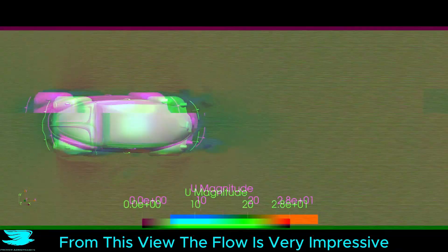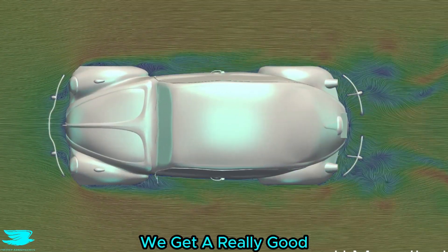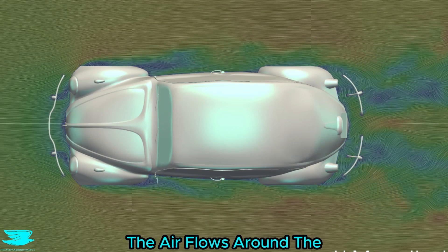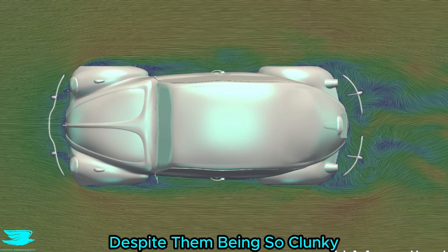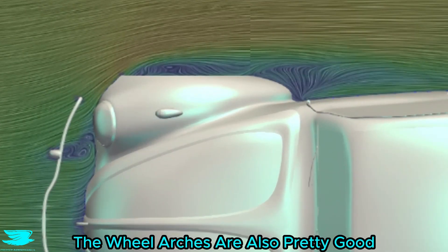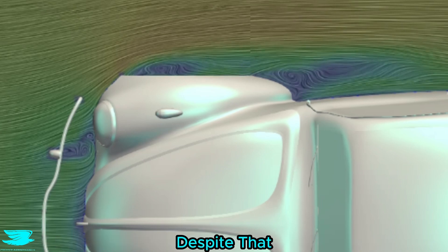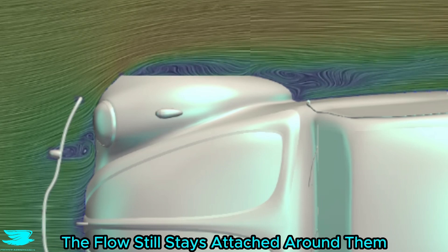How does the flow look from on top though? From this view, the flow is very impressive. We get a really good appreciation of just how well the air flows around the front and rear bumpers, despite them being so clunky. The wheel arches are also pretty good, especially given how cumbersome they are. Despite that, the flow still stays attached around them.